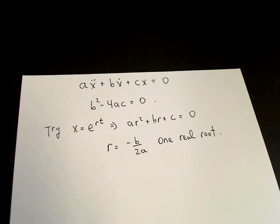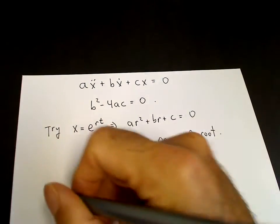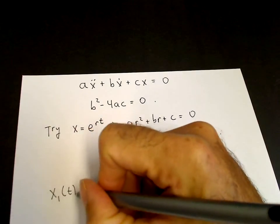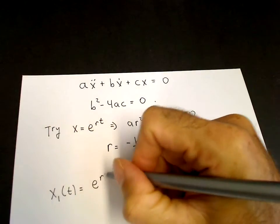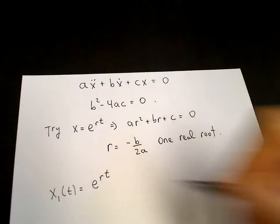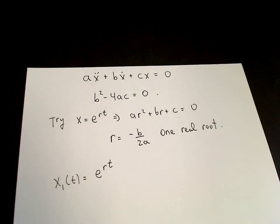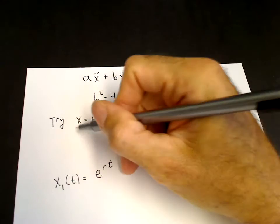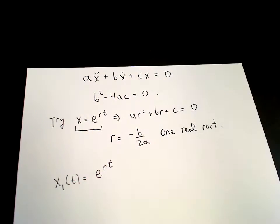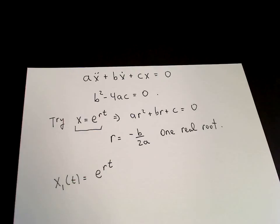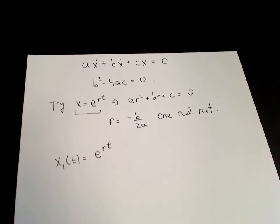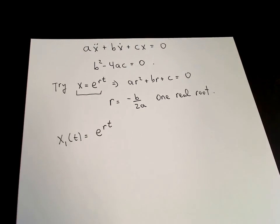That means we only have one solution: x1 of t equals e to the rt. We're missing a solution, because we need two solutions in order to satisfy two initial conditions — one on x and one on x-dot. So that missing solution must not be of the form x equals e to the rt; it must be of a different form.